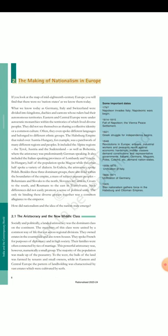Section 2: The making of nationalism in Europe — some important dates. 1797: Napoleon invades Italy, Napoleonic wars begin. 1814–1815: Fall of Napoleon, the Vienna peace settlement. 1821: Greek struggle for independence begins. 1848: Revolutions in Europe — artisans, industrial workers and peasants revolt against economic hardships; middle classes demand constitutions and representative governments; Italians, Germans, Magyars, Poles, Czechs, etc. demand nation-states. 1859–1870: Unification of Italy. 1866–1871: Unification of Germany. 1905: Slav nationalism gathers force in the Habsburg and Ottoman Empire.